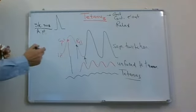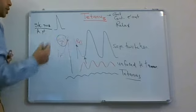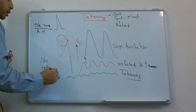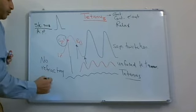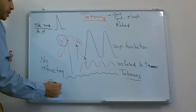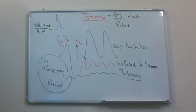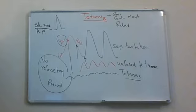Why can skeletal muscle produce tetanus? Because it can respond during contraction — it has no refractory period, and excitability is not lost. In contrast, the cardiac muscle cannot produce tetanus because during contraction there is a complete loss of excitability, or absolute refractory period.